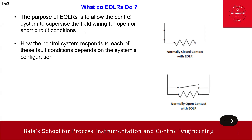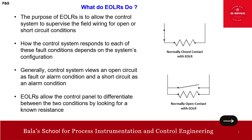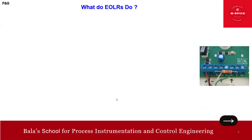The key point is that EOLR allows the control system to supervise field wiring, and how the system responds to each fault condition depends on configuration. Generally, the control system views an open circuit as a fault or alarm condition, and a short circuit as an alarm condition. EOLR allows the control panel to differentiate between these two conditions by looking for a known resistance.